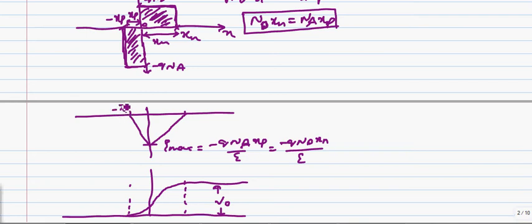This we know is minus x_p, this is x_n. Now, v_0, we can write v_0 equals to the area under this curve, right.